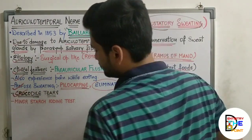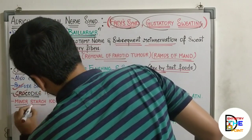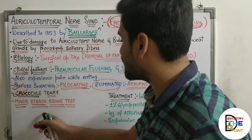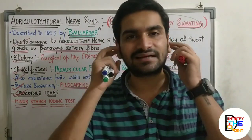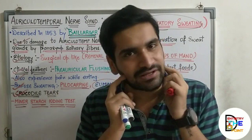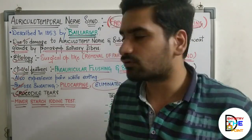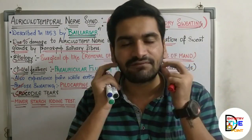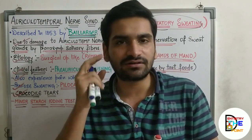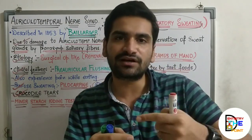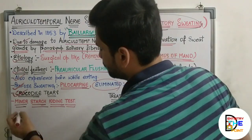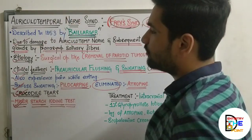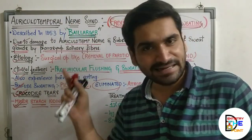There is one more test to detect Auriculotemporal Nerve Syndrome: the Minor Starch Iodine Test. One percent iodine is coated in the pre-auricular region, then a layer of starch is applied over it, and the patient is advised to eat something. Whenever sweating is produced, the color of the iodine solution turns blue, indicating a positive sign for the syndrome.